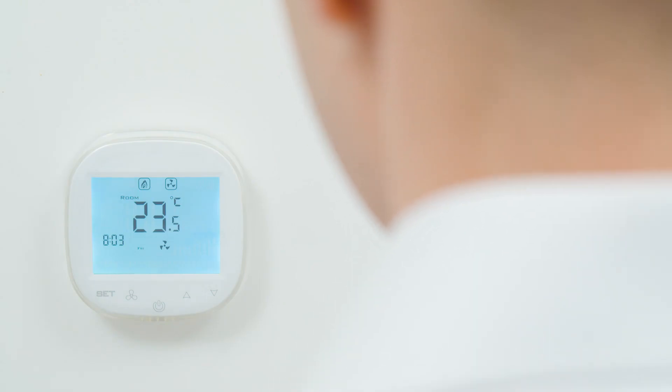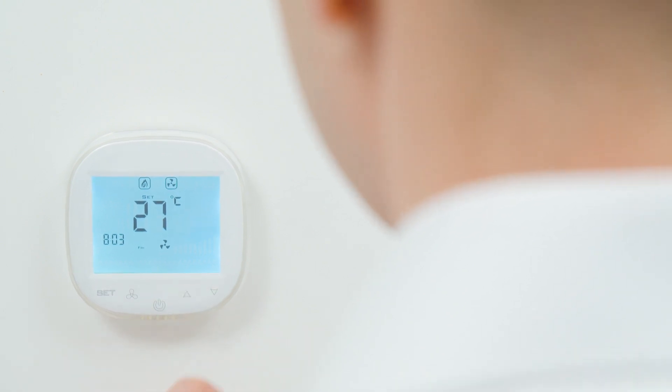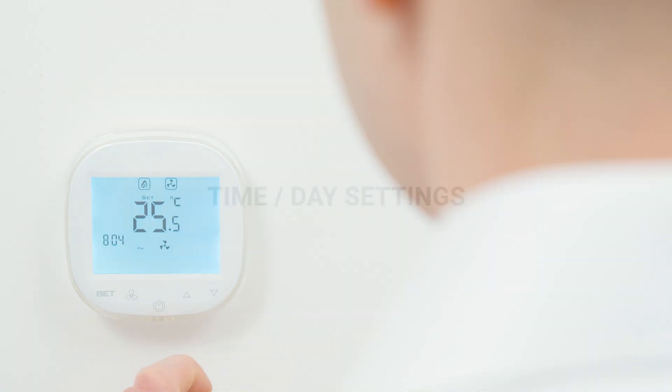The up and down buttons allow us to set the target temperature. Use the up button to increase the temperature by half a degree and use the down button to decrease the temperature by half a degree.